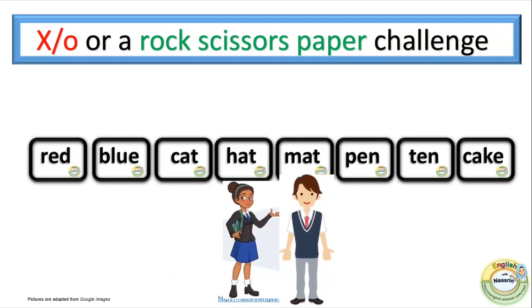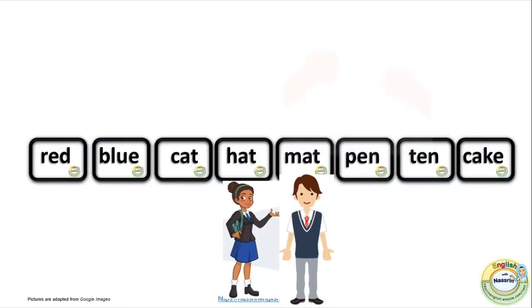The first person from each line will have to say the meaning of each word they pass until he or she meets the other competing student line. At the meeting point they play either rock scissors paper or X and O.